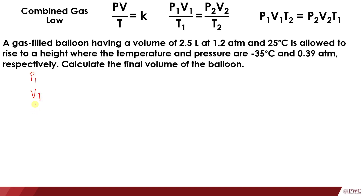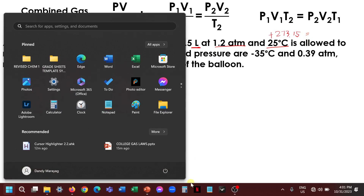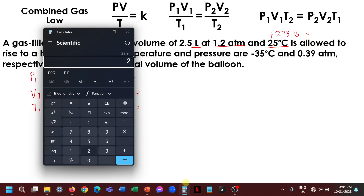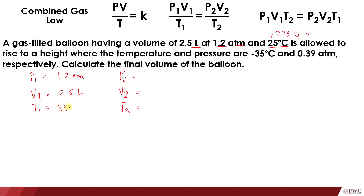For initial values: pressure P1 = 1.2 atm, volume V1 = 2.5 liters, temperature T1 = 25°C. We always need to convert to absolute temperature in Kelvin by adding 273.15. So T1 = 25 + 273.15 = 298.15 Kelvin.